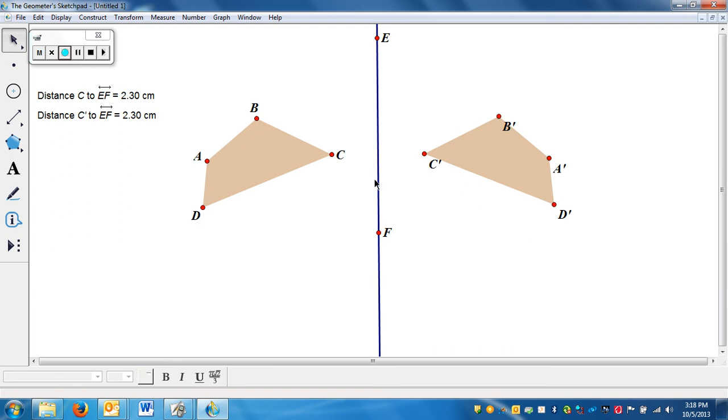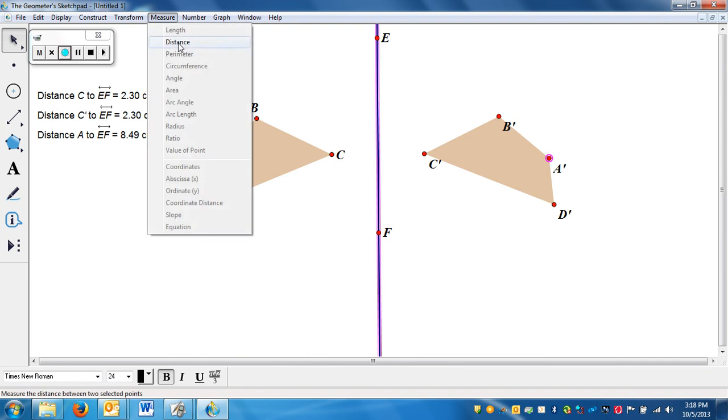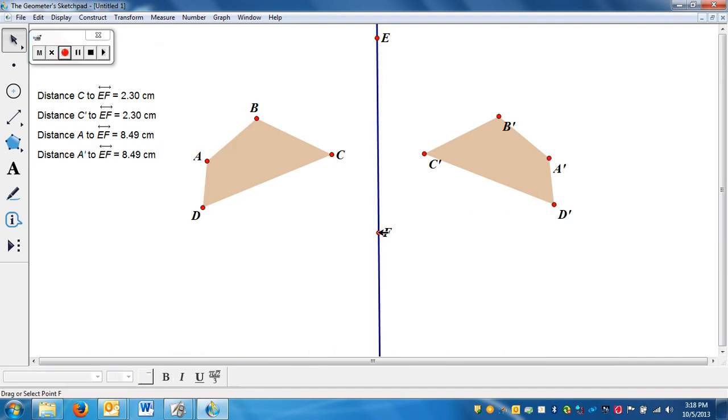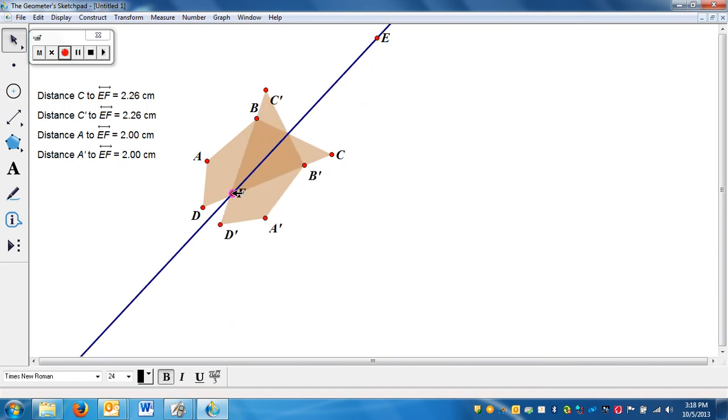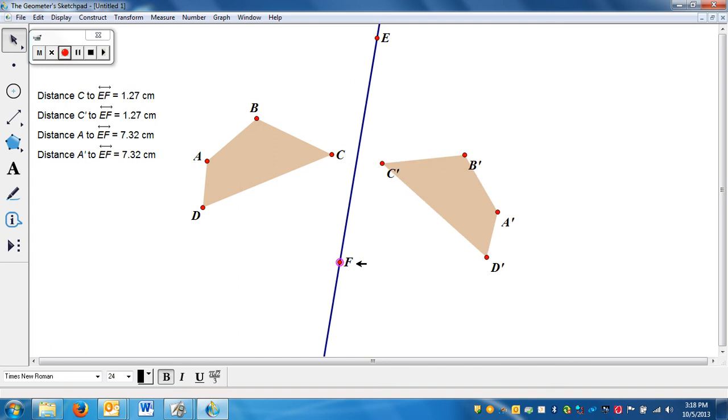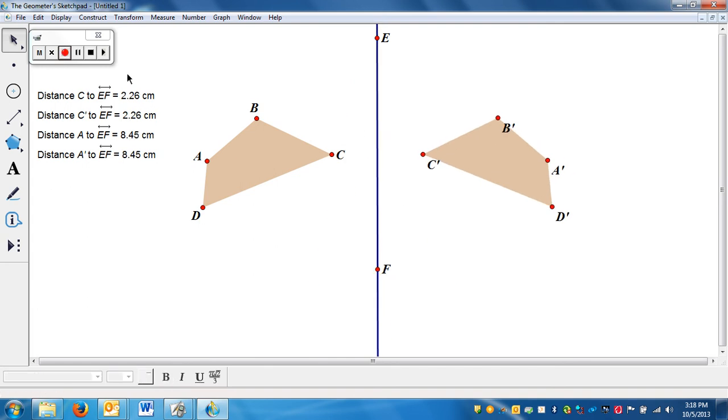Point and point A prime to the line should also be the same distance. And again if I move them and even have them intersect each other, they're always the same distance away.